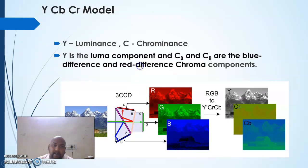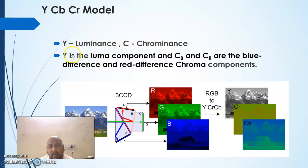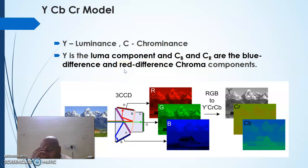In the YCbCr model, Y refers to luminance and C refers to chrominance. Y is the luma component, and Cb and Cr are the blue-difference and red-difference chroma components. Chroma here means color.